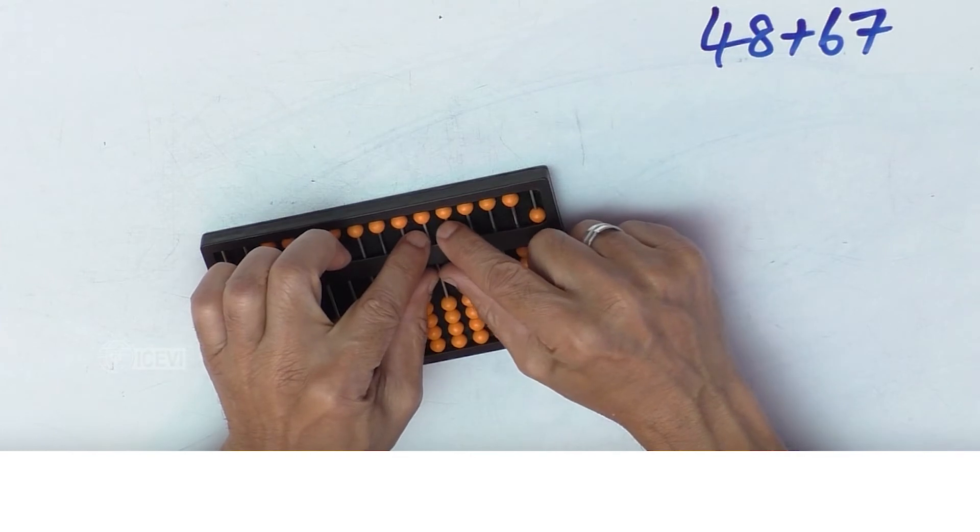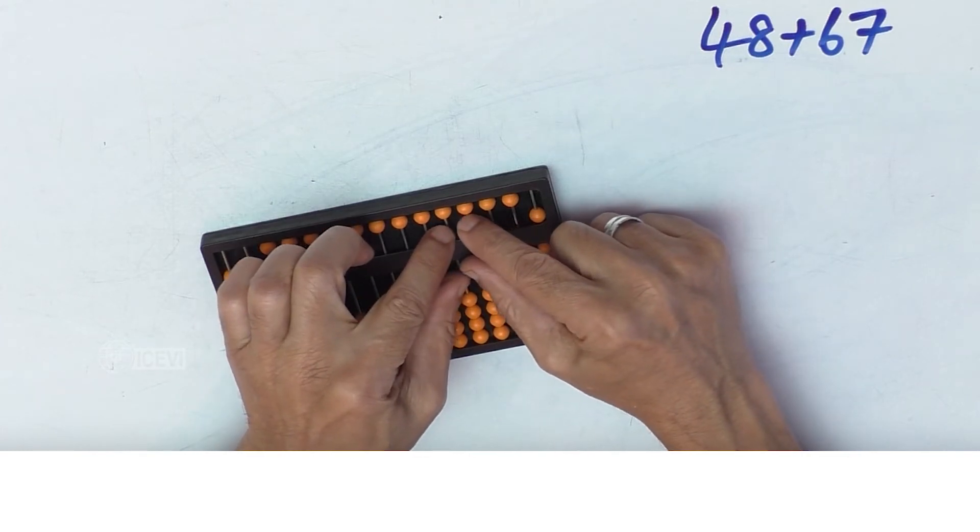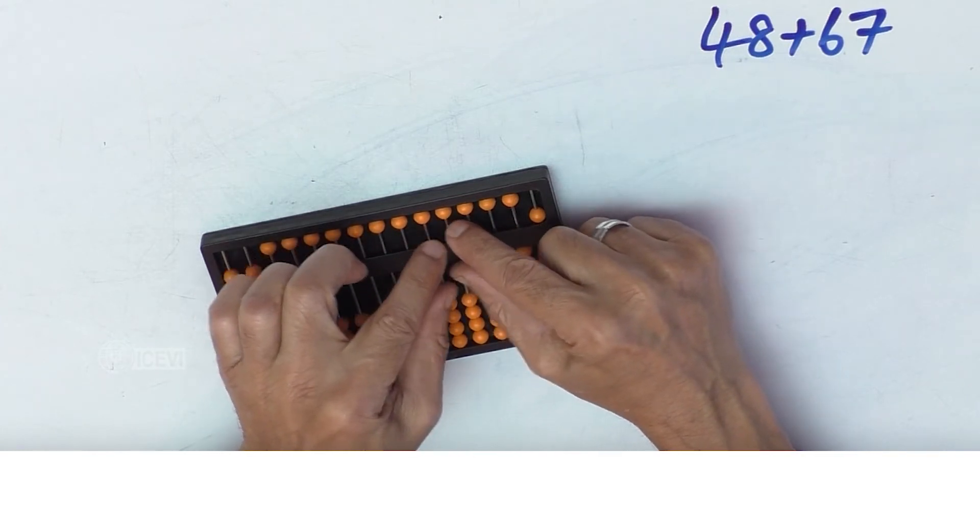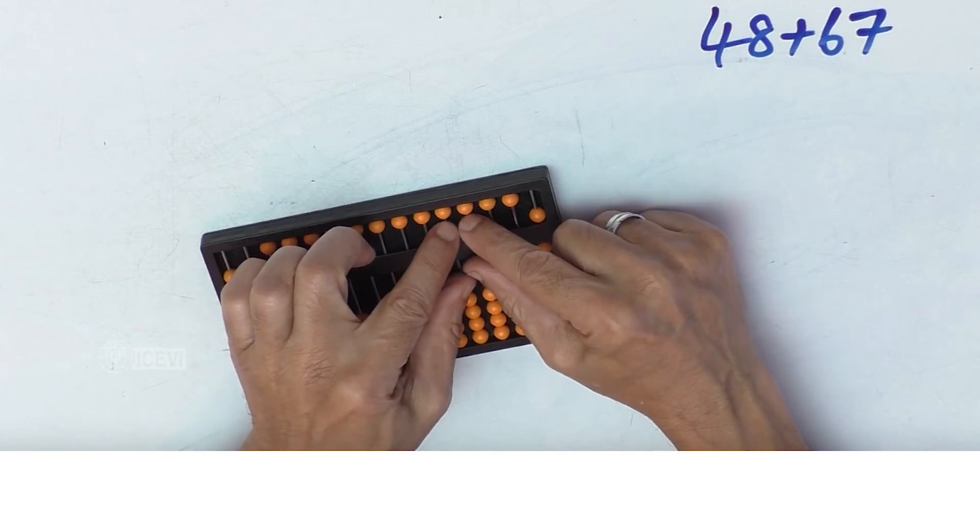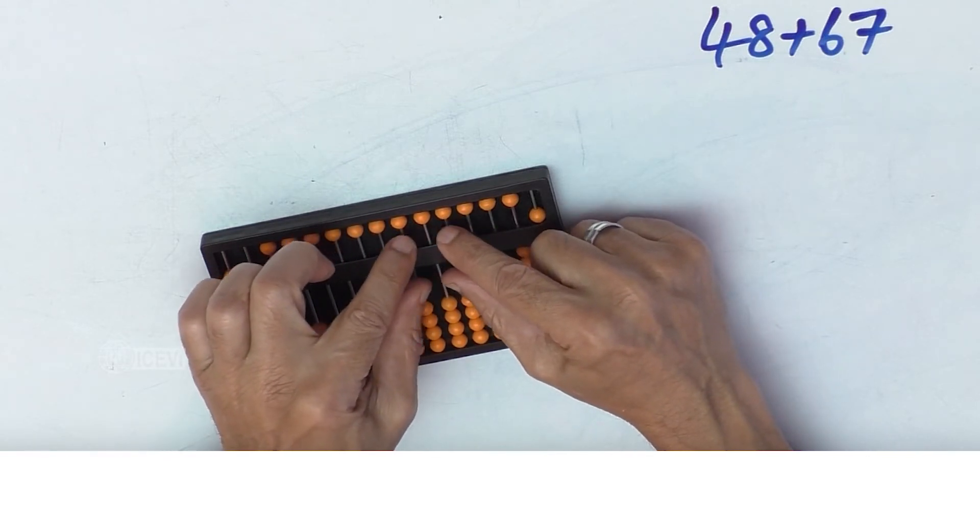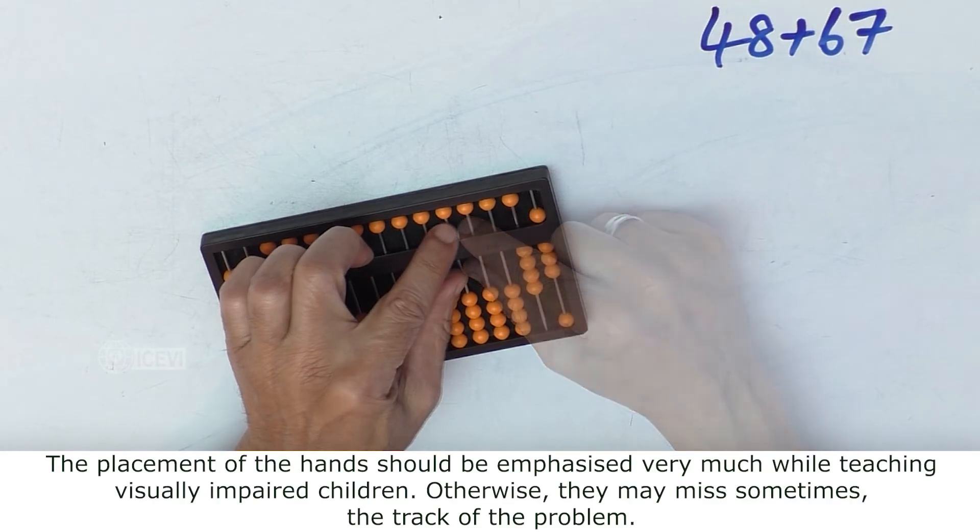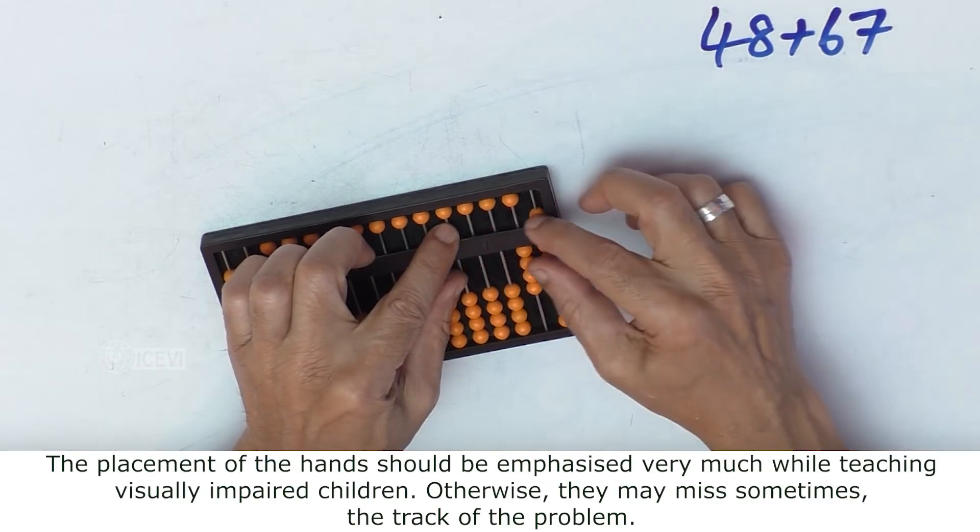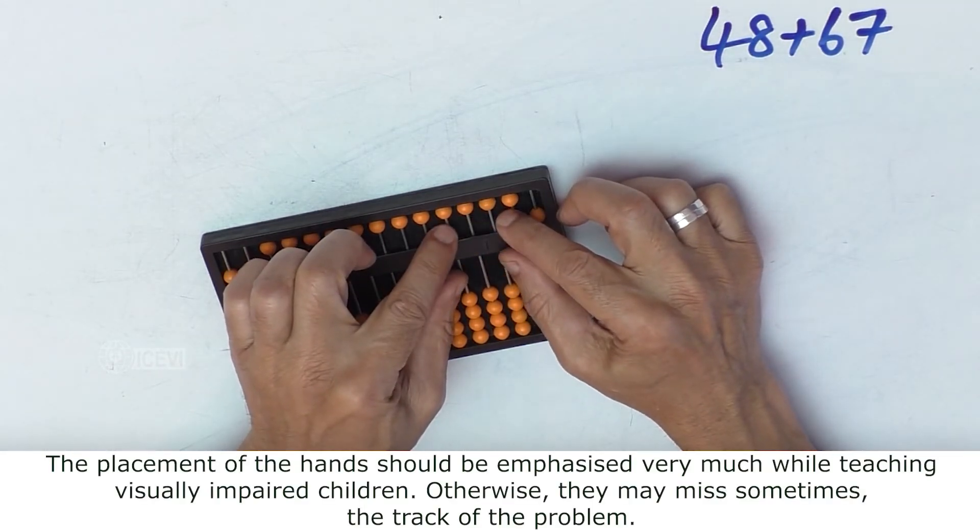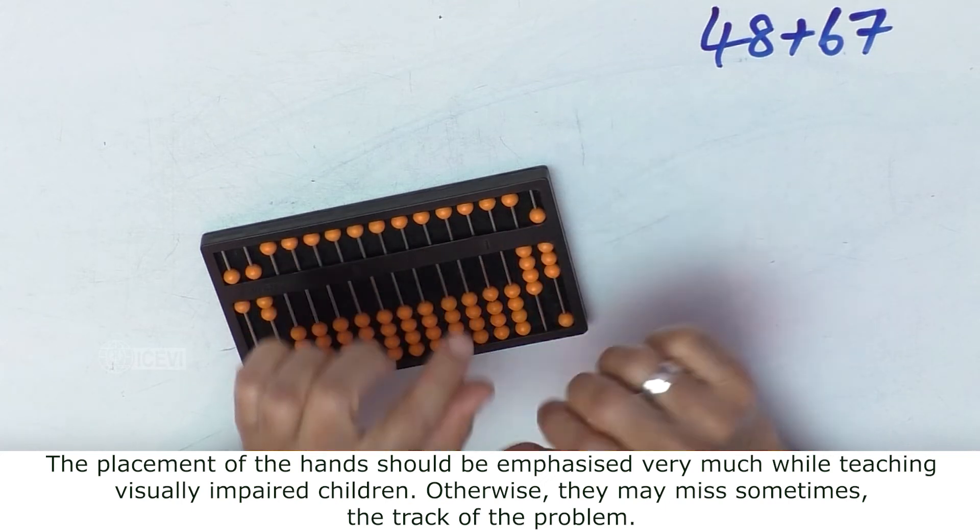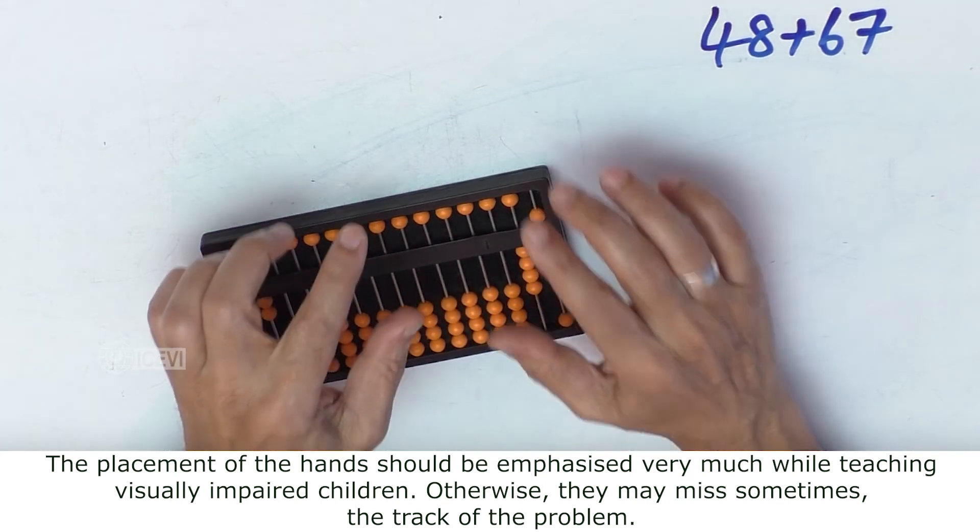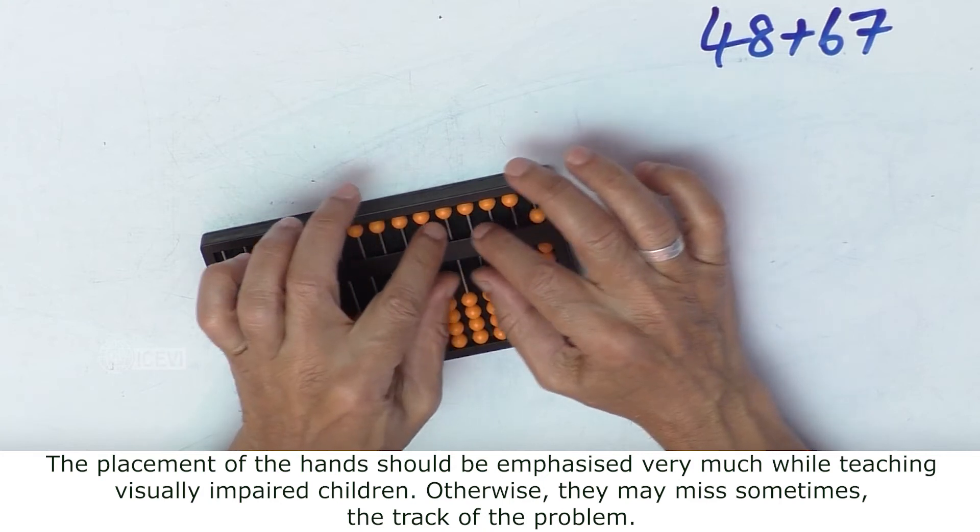When doing the abacus operation, especially in the early days when the child is learning, the finger and hand positions are absolutely important. The placement of hands should be emphasized very much while learning abacus skills; otherwise, they may sometimes lose track of the problem.